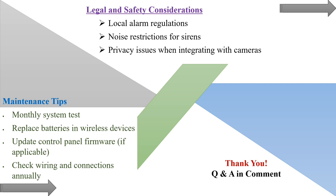Maintenance tip: conduct monthly system tests. Ensure you are testing the system even if you don't expect intruders. For example, if you have a system on your vehicle, test it sometimes because it might be faulty — and you could find your vehicle compromised.